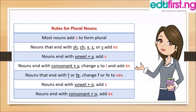You can also form the plural by changing words that end with -f or -fe to -ves. For example, calf becomes calves, knife becomes knives.